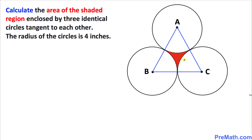Now let's go ahead and connect points A and B, A and C, and B and C. As you can see, this is the radius of the top circle which is four inches, and this side is four inches as well, so this side is going to be eight inches. Likewise, this side is eight inches, and this one is eight inches as well.